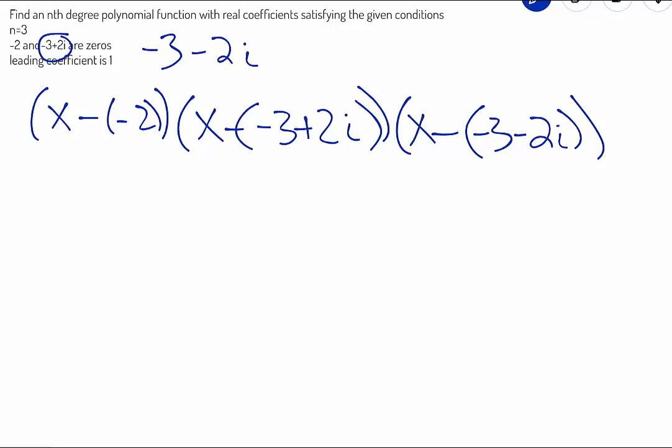What we're going to have to do after this is we're going to have to simplify these, get them multiplied all out together, and those are going to form our polynomial function. So simplifying here, we get x+2. Over here, we get x+3-2i. And then we get x+3+2i.